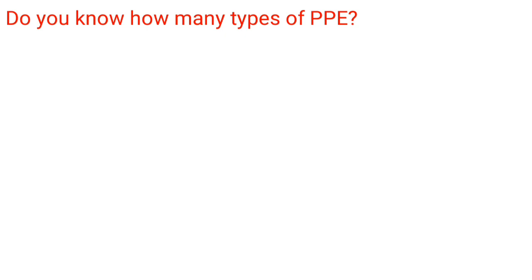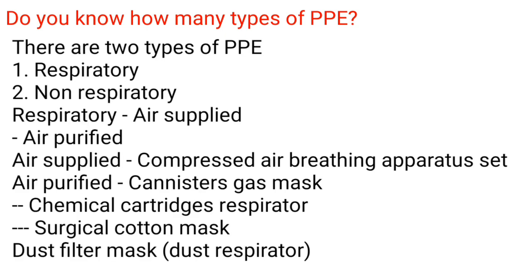How many types of PPE are there? There are two types: respiratory and non-respiratory. Respiratory PPE includes air-supplied (compressed air breathing apparatus set) and air-purified (canister gas mask, chemical cartridge respirator, surgical cotton mask, dust filter mask, and dust respirator).